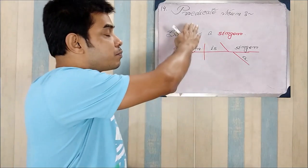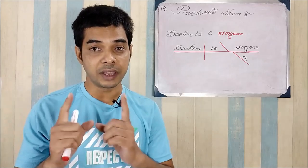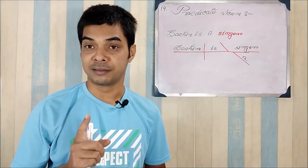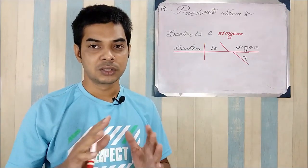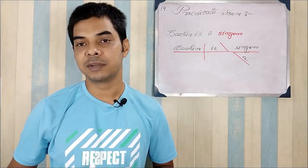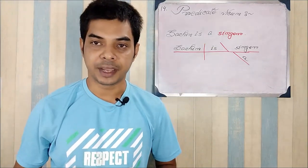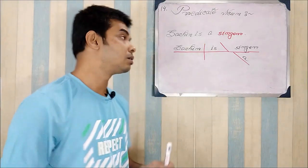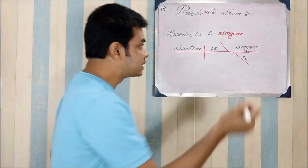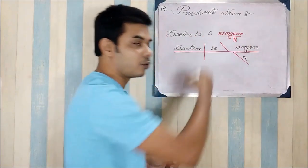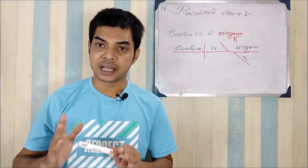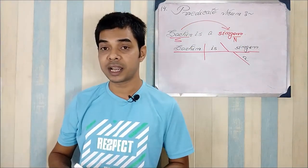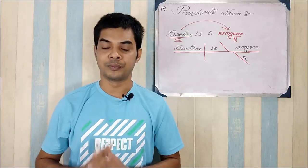Now the rule is about predicate nouns. When we find a noun in a predicate, how is it handled? We'll create another video for predicate nouns in detail, but here we'll just check the sentence first. Take 'Sachin is a singer.' The word 'singer' is a noun used as an adjective to describe 'Sachin' the subject — but since it is a noun, it is called a predicate noun.